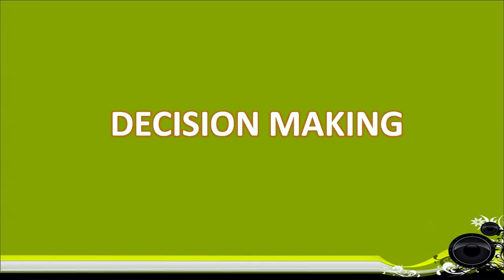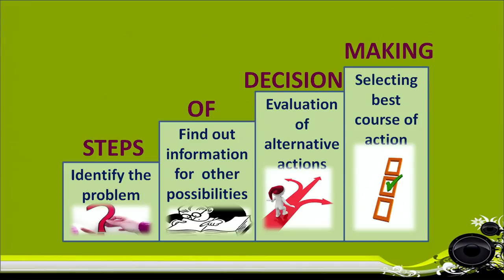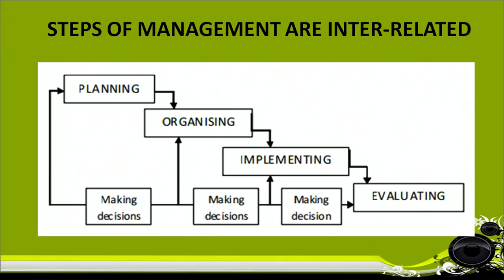Now we will talk about decision making. A decision is a selection of a course of action among alternative choices — as you can see in this picture showing which way to go. It is about taking a firm decision to determine future course of actions. The steps in decision making are: first, identify the problem; then find information for a plan or other possibilities; then evaluate all alternative actions; then select the best course of action. Use decision making at every step of management because every step is interrelated — at planning, organizing, implementing, and evaluating.